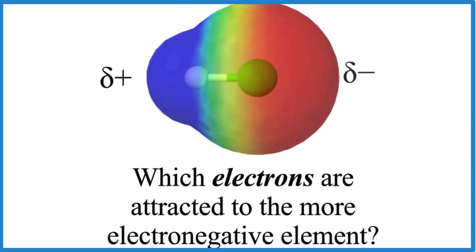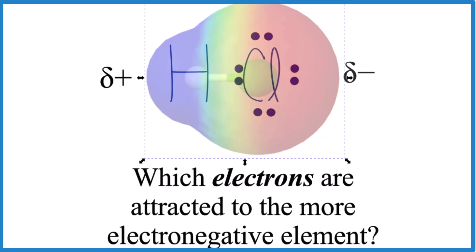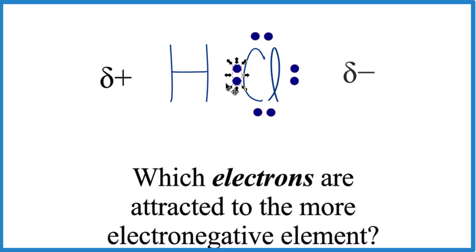Pause and answer this question. Which electrons are attracted to the more electronegative element? In this case, chlorine. We can see it's those electrons right here in the chemical bond that are attracted to the more electronegative element. Important to know.